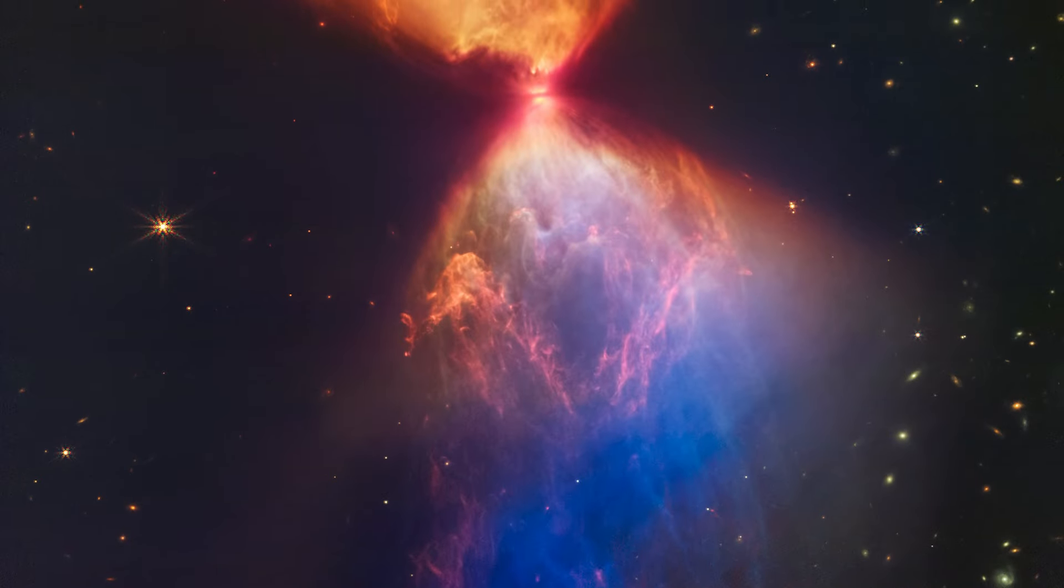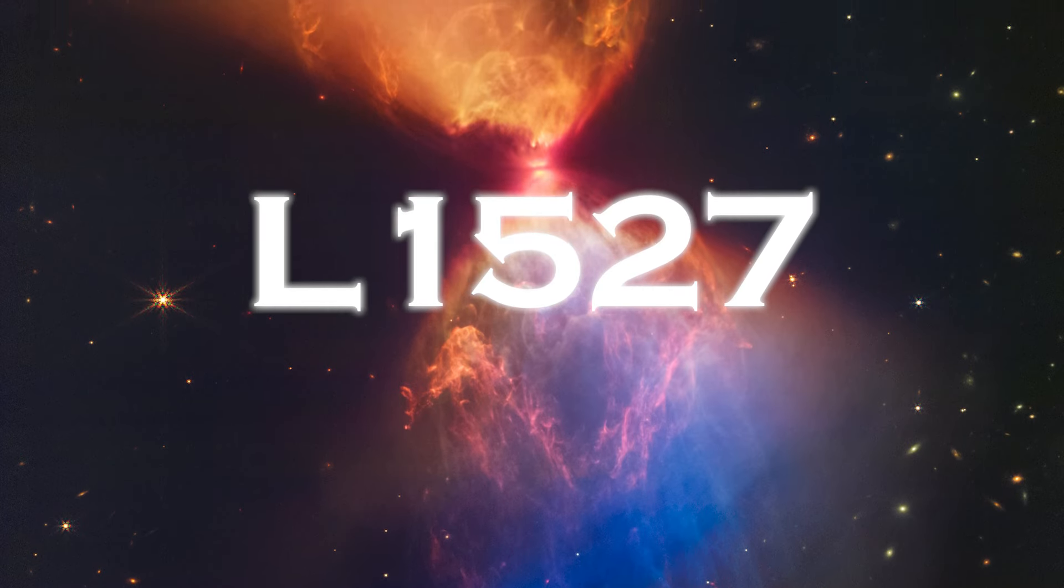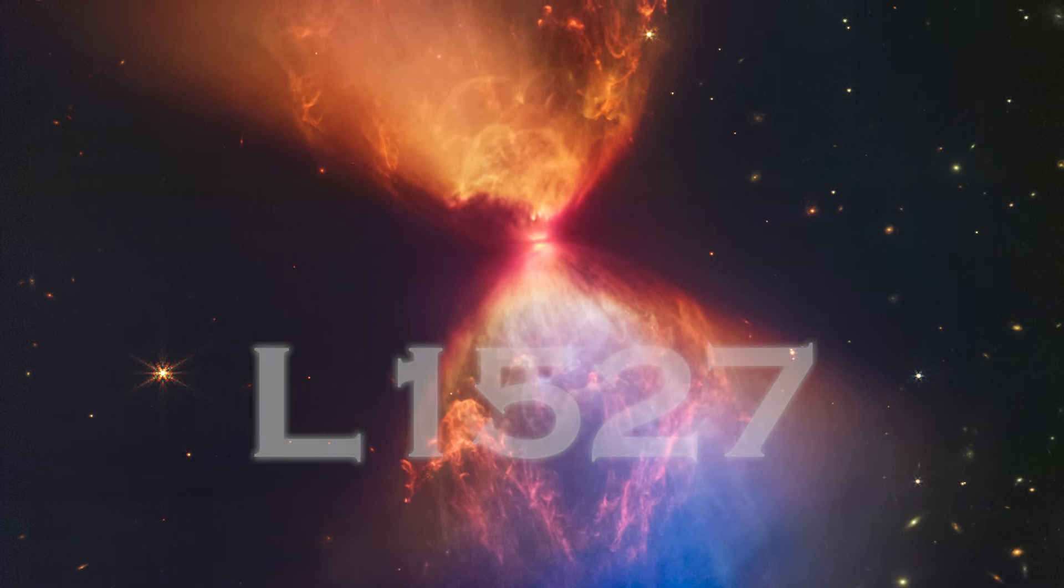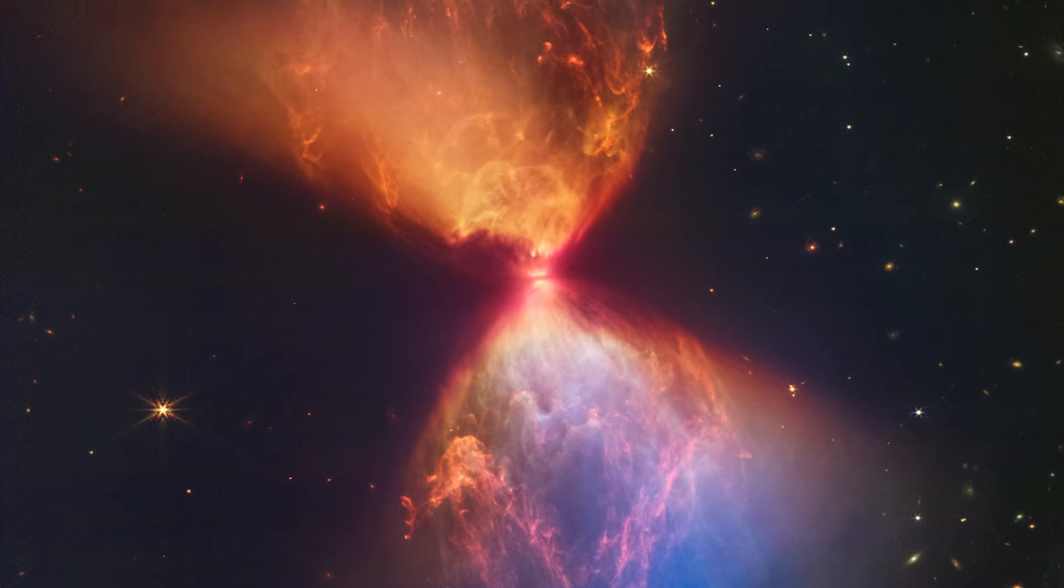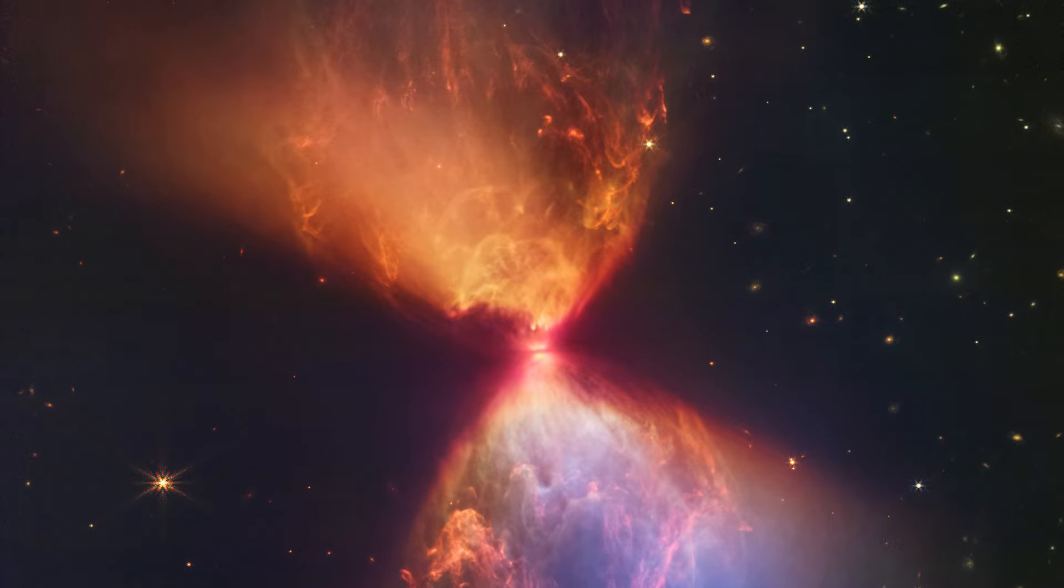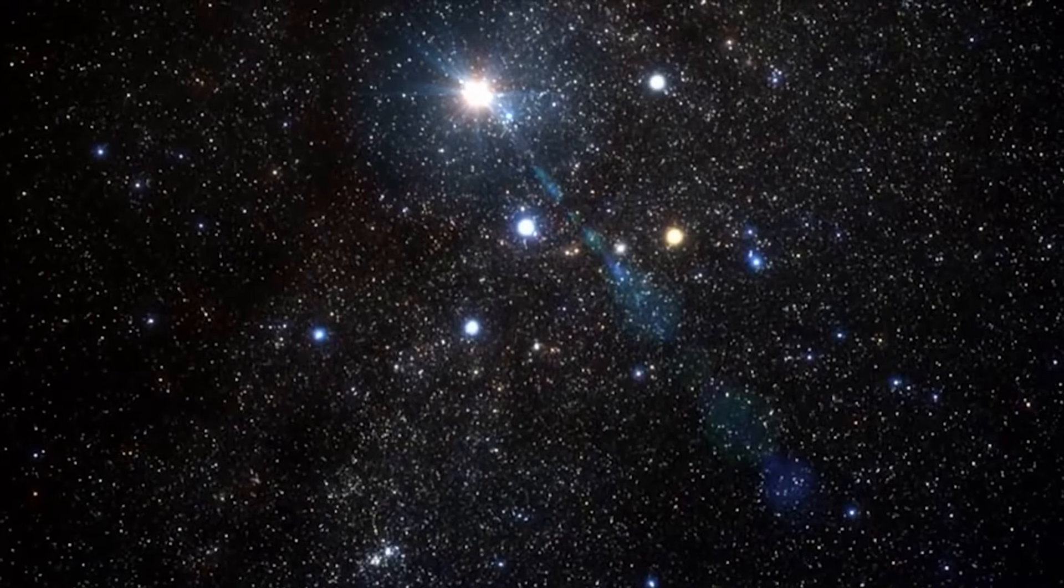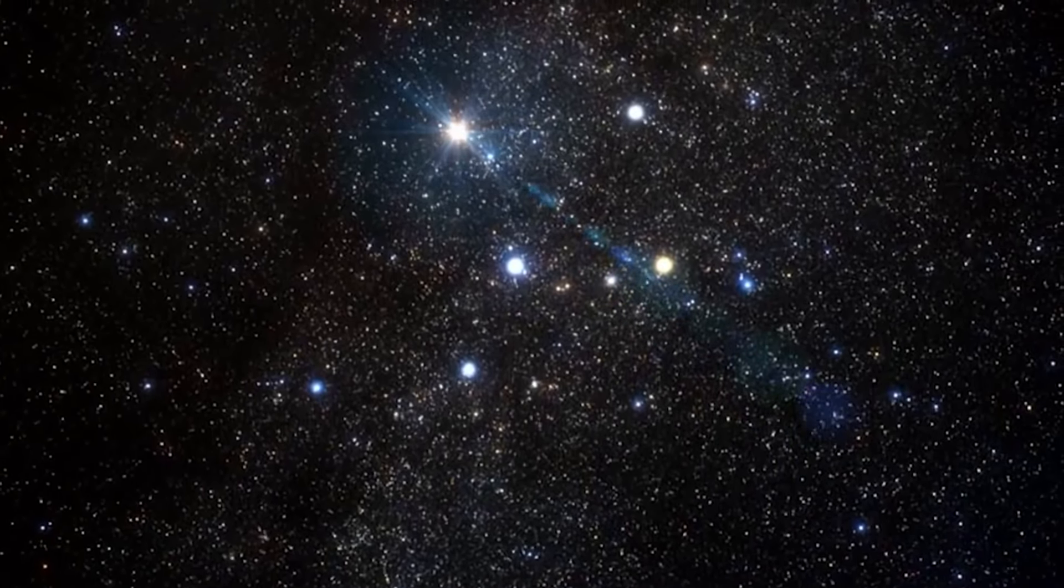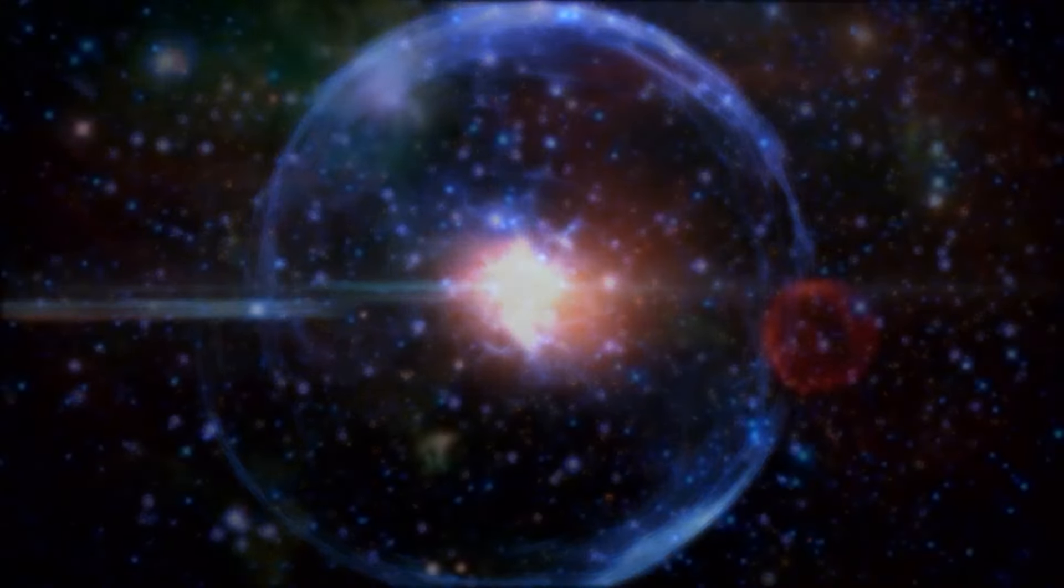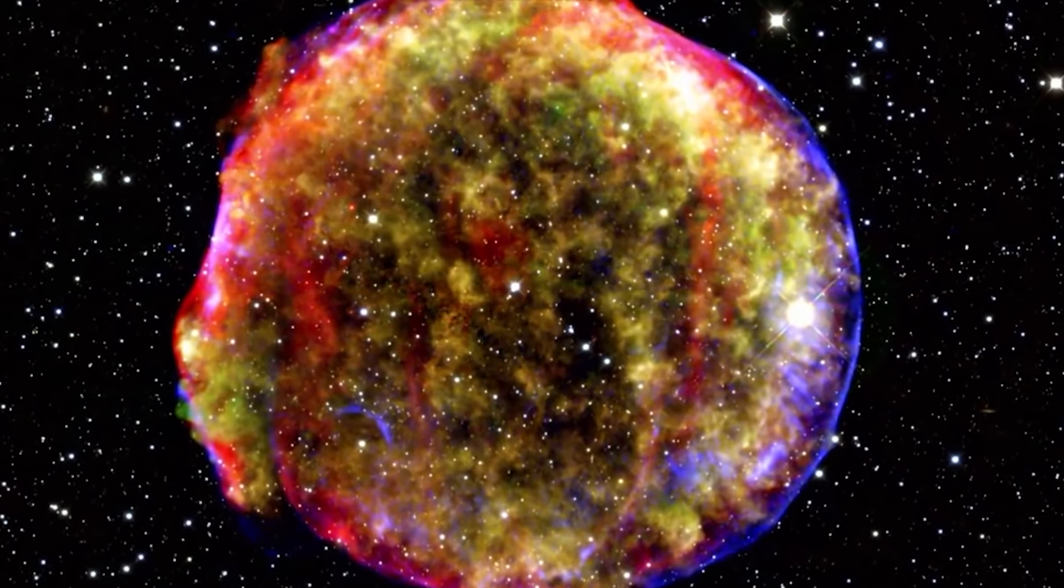One notable example is the stunning image Webb captured of a protostar in the dark cloud L1527. To understand how a star forms, it is relevant to note that stars are born when a cloud of gas and dust collapses due to its own gravity. As a result, the matter in the dead center is intensely compressed, which causes the molecular hydrogen to break down into atoms. The protostar that forms in this process already glows, but still processes insufficient mass to initiate hydrogen fusion. This only becomes possible when the young star accumulates additional material and becomes sufficiently dense.